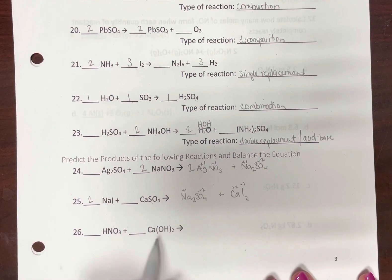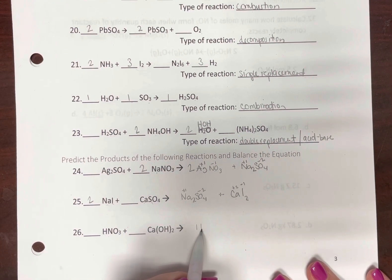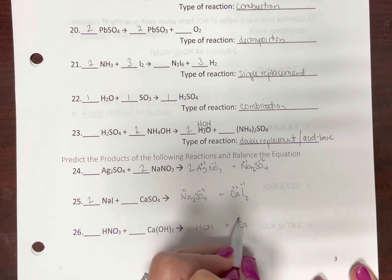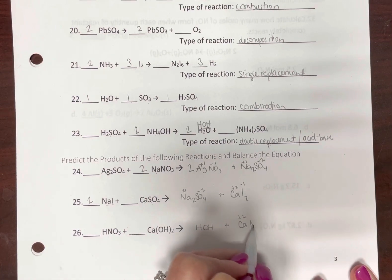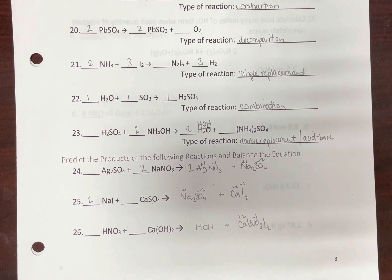This is nitric acid and calcium hydroxide, so this is an acid-base reaction, or you could run it as a double replacement reaction. Here, keep the H, switch. That's water, you can write it as H2O, that's fine. And calcium nitrate. There we go.